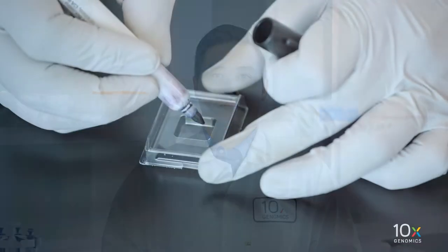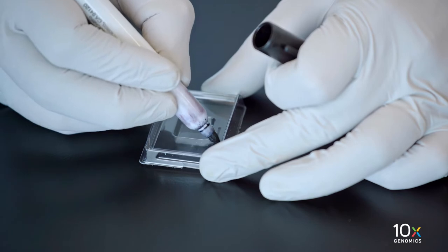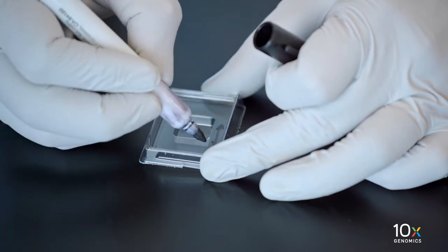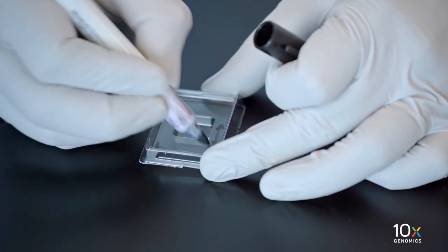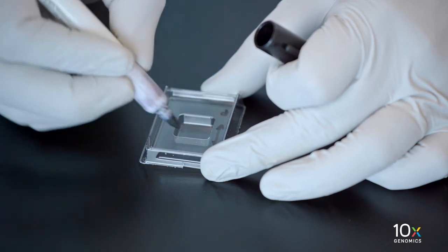First, label the cryo mold to mark the orientation of the tissue. Label the cryo mold before adding OCT and tissue. The OCT will quickly turn white once frozen, making it hard to determine tissue orientation later.